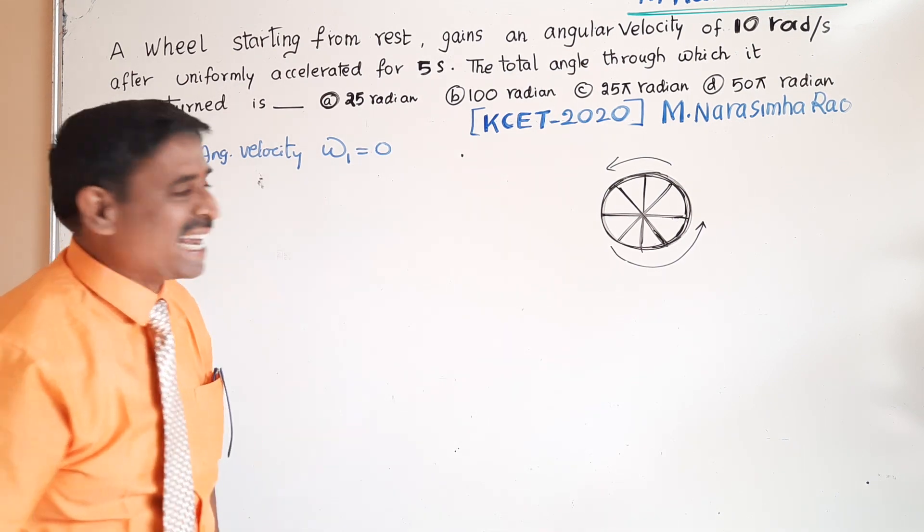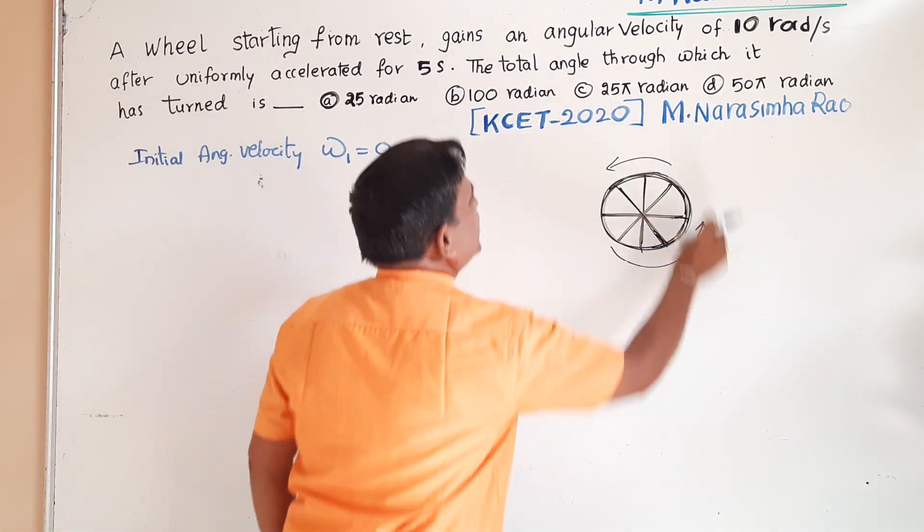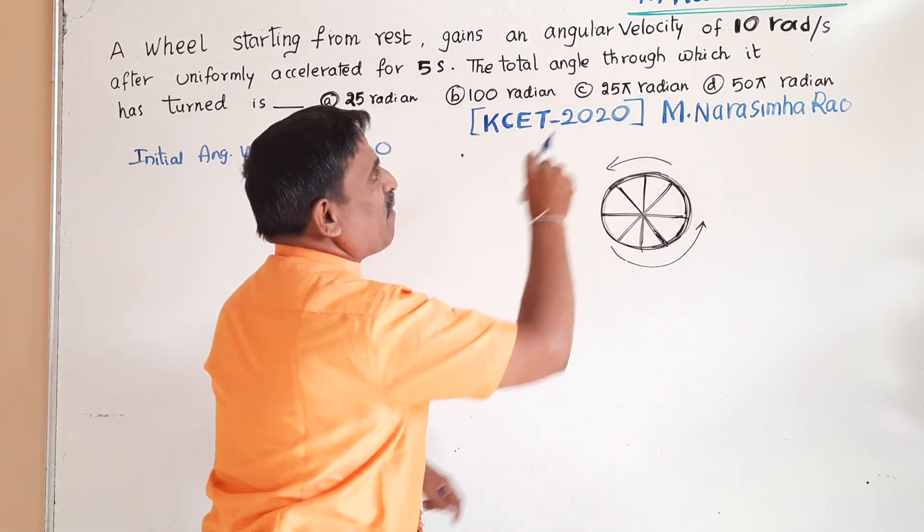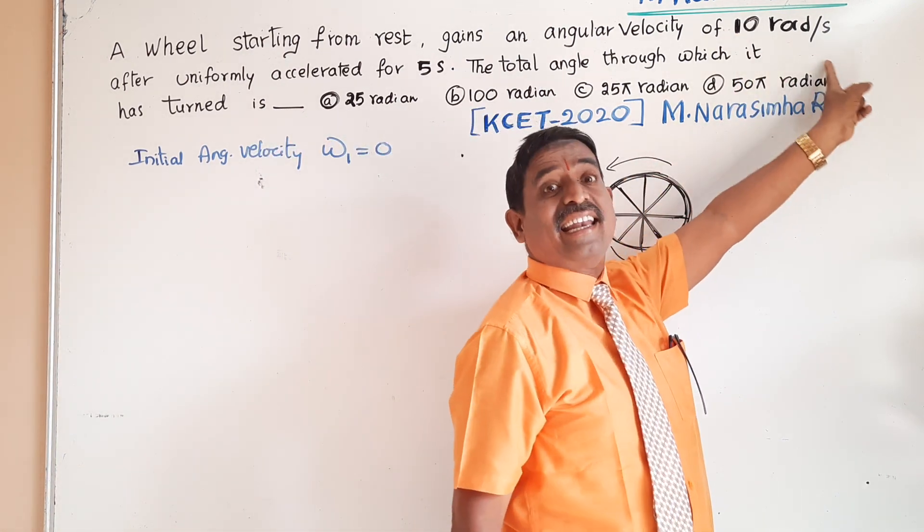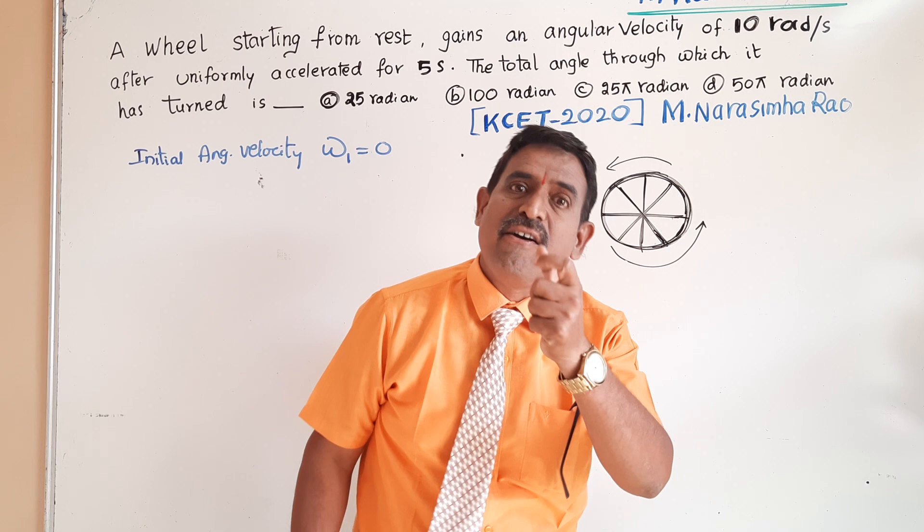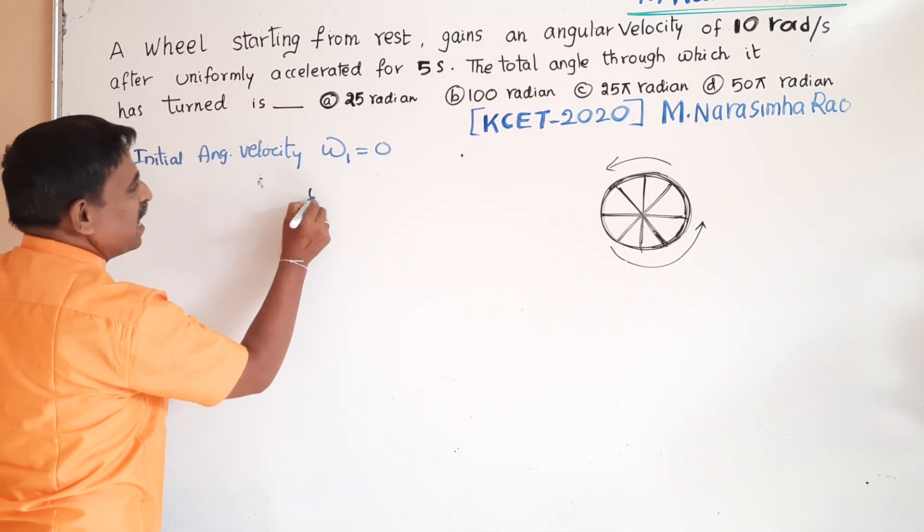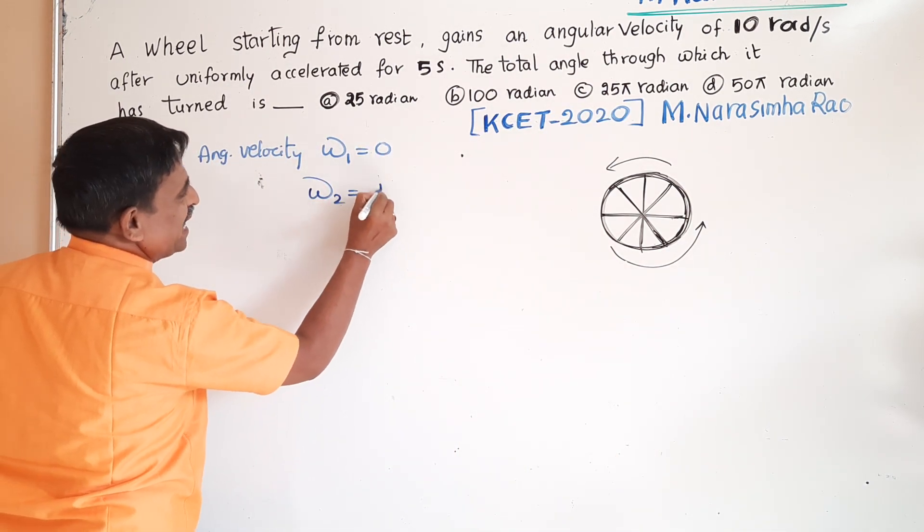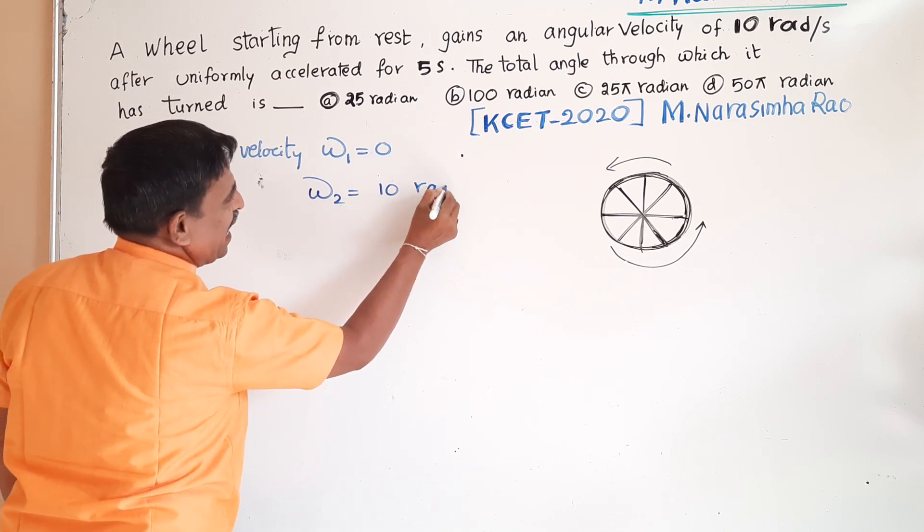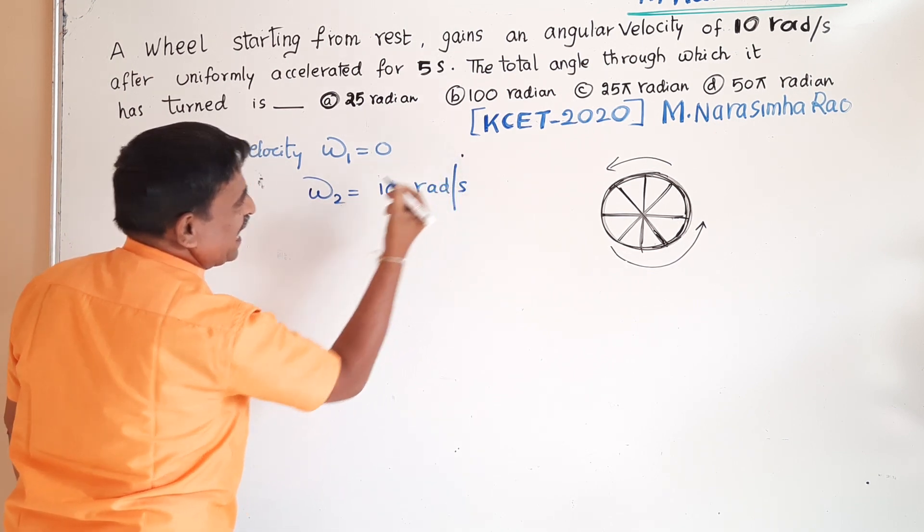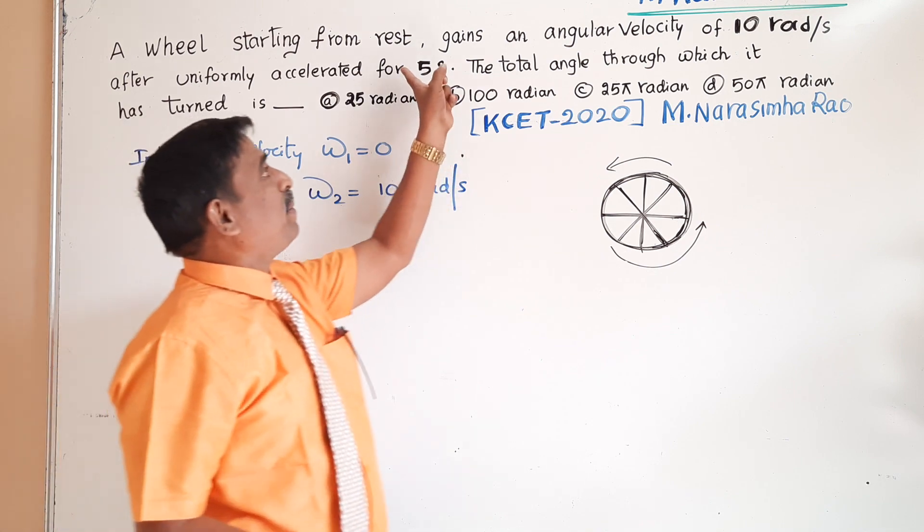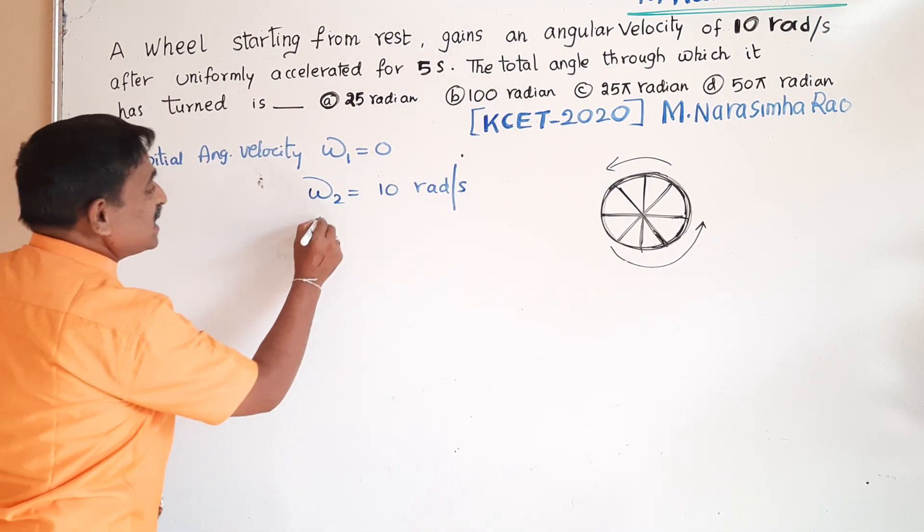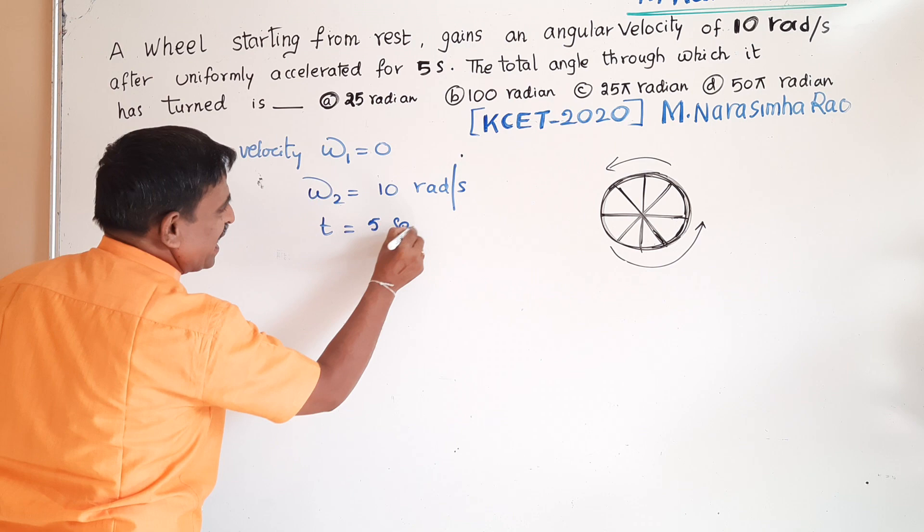After 5 seconds its angular velocity is 10 radian per second. Final angular velocity omega 2 is equal to 10 radian per second. Time taken is 5 seconds, t is equal to 5 seconds.